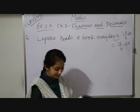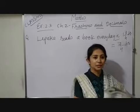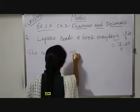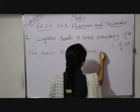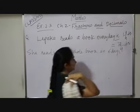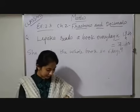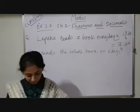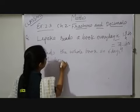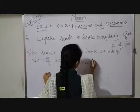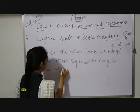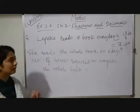Now, she reads the entire book in 6 days. So here she reads the whole book in 6 days. It means till 6 days, daily she is reading 7/4 hours. Now, how many hours in all were required by her to read the book? So, number of hours required to complete the whole book or to read the whole book.